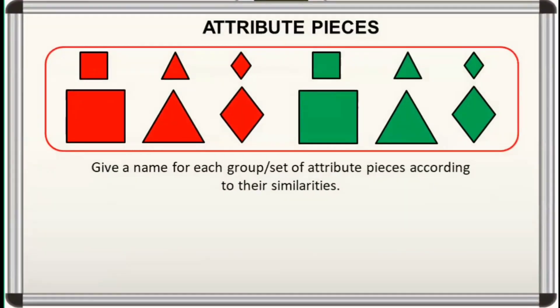We'll start with this simple activity. Consider the attribute pieces inside the box. Ang attribute pieces ay mga geometric models na mayroong iba't ibang pugis, laki, at kulay. I will form a group or set of attribute pieces, and you're going to give a name for each group or set based on their similarities.